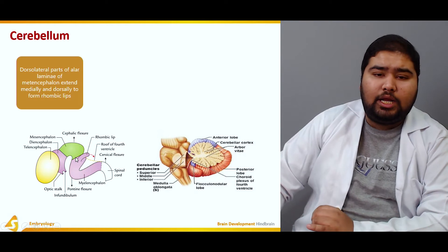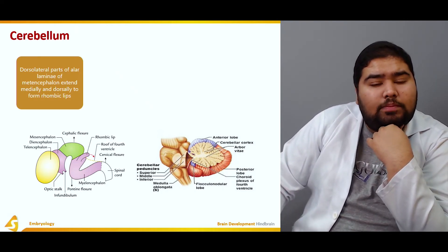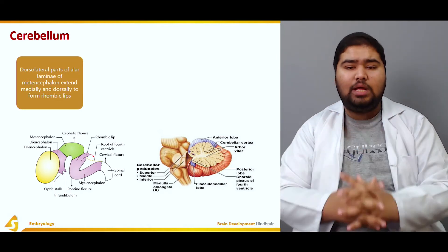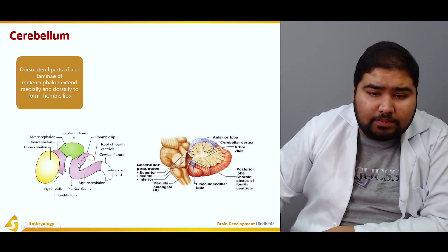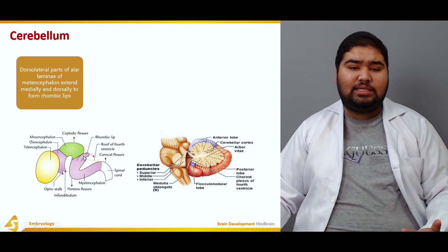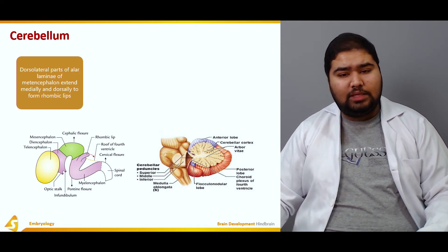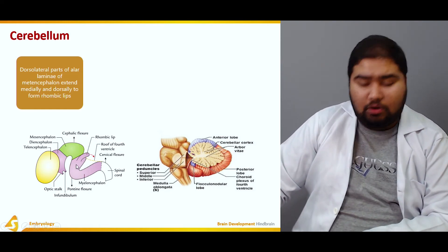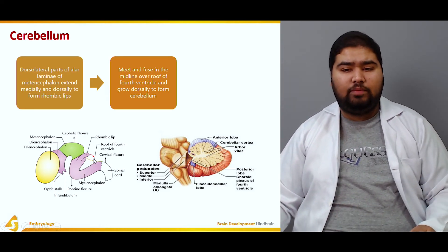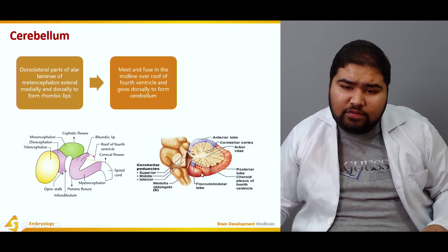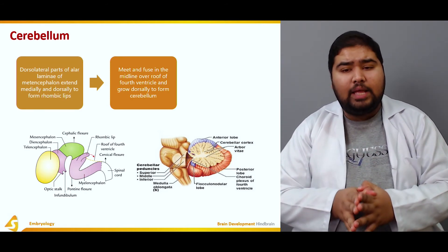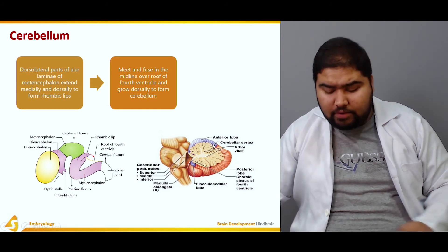The development of the cerebellum begins with the dorsolateral parts of the alar lamina of the metencephalon extending medially and dorsally to form the rhombic lips. These rhombic lips are the precursor of the cerebellum. They meet and fuse in the midline over the roof of the fourth ventricle and grow dorsally to form the cerebellum — this is the adult cerebellum being formed.